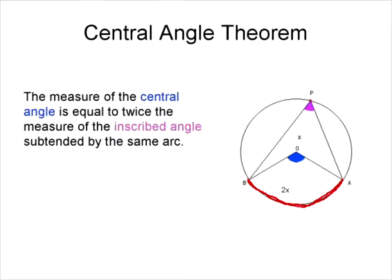Now if that's true, then the central angle is twice the inscribed angle. And that is what's called the central angle theorem. So if we know one of the angles, we can determine what the other angle is. This has to be x, as long as they subtend the same arc or the same chord.